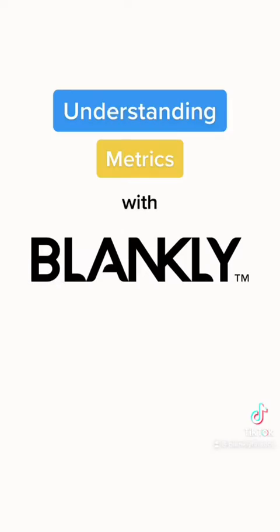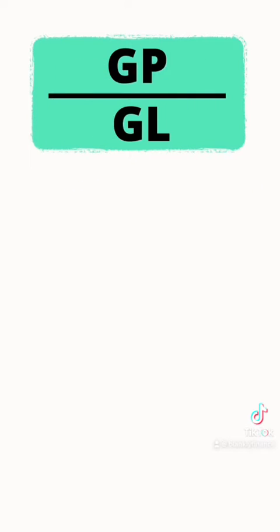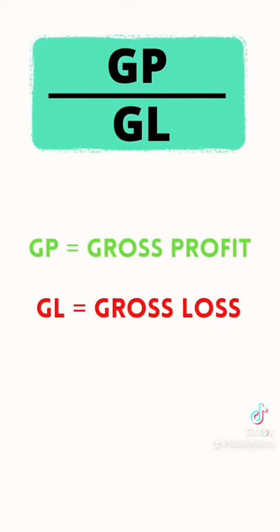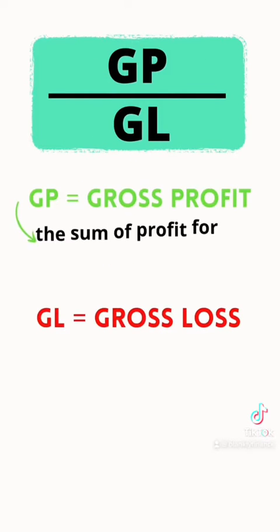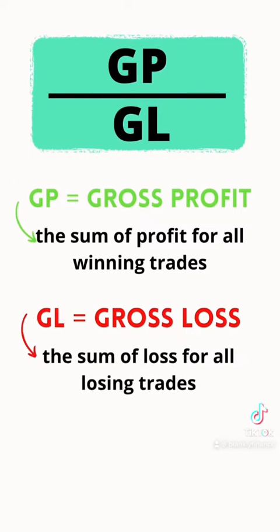Want to know if you have a profitable trading strategy? Today in our Understanding Metrics series, we cover the profit factor, which helps us understand the amount of gain we have per unit of risk. It is calculated by dividing gross profit by gross loss across the entire trading period, where gross profit is the sum of profit for all winning trades, and gross loss is the sum of loss for all losing trades.